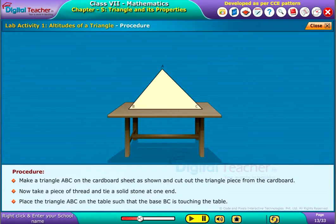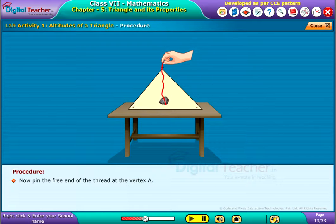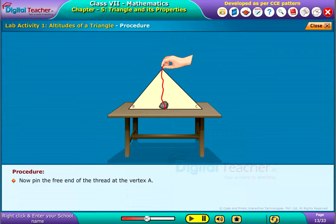Place the triangle ABC on the table such that the base BC is touching the table. Now pin the free end of the thread at the vertex A.